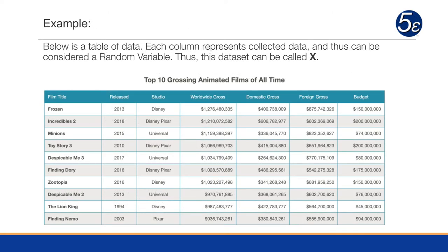Here's an example of data. Each column represents the collected data and can be considered a random variable, so we'll call our dataset X. We have film titles, released, studio, worldwide gross, and so forth. We may not use all of these in our analysis — we may not use studio or film title — but this is what our dataset looks like and it forms a matrix X.